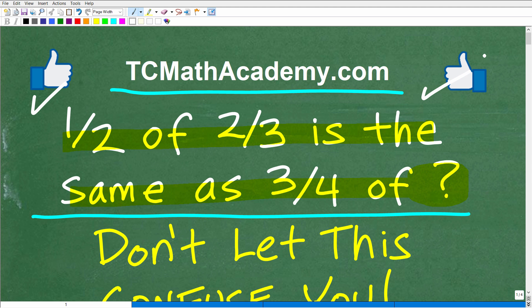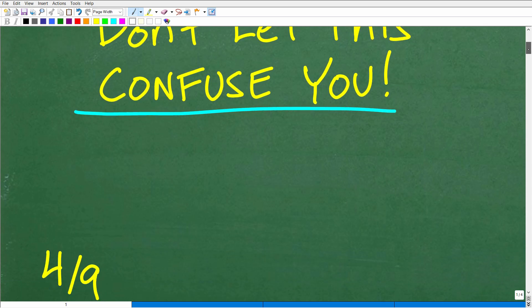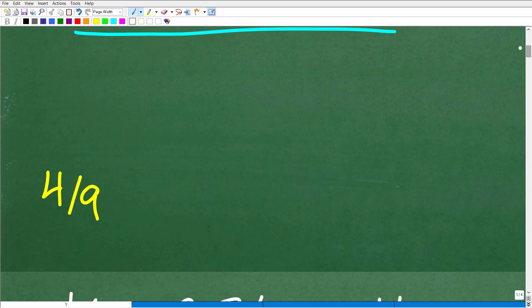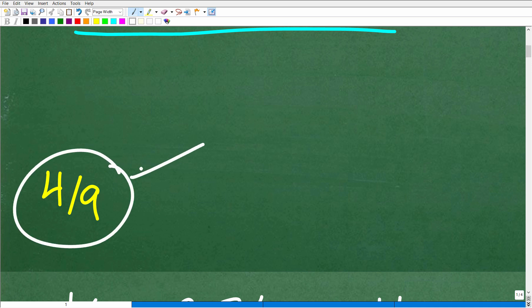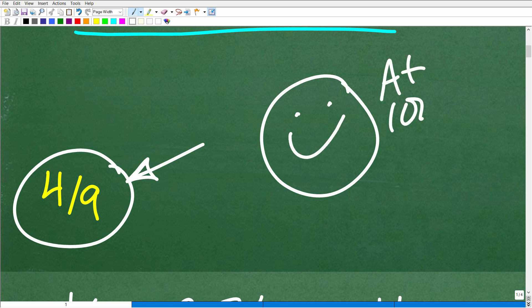Okay, so again, one half of two thirds is the same as three fourths of what number? Let's go to take a look at the answer. The answer is four ninths. All right, so how'd you do? Well, if you got this right, that is great. Matter of fact, we're going to give you a nice little happy face and a plus a 100% and multiple stars. So you can brag to your friends and family.